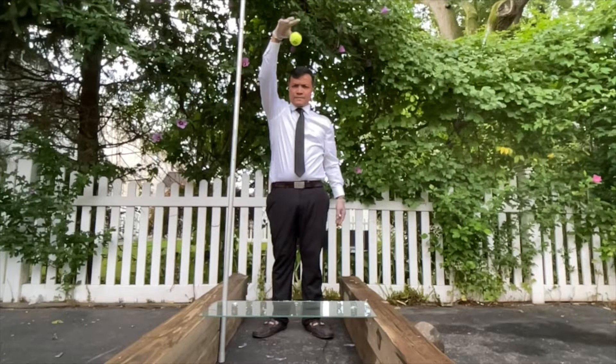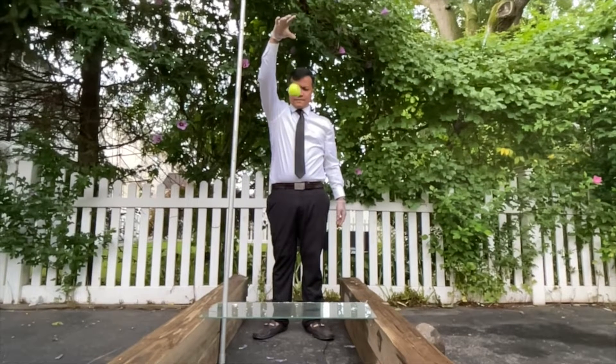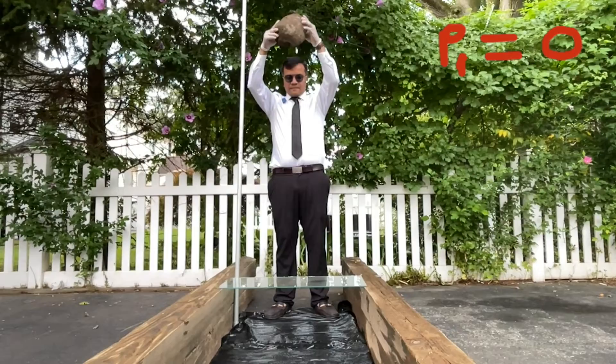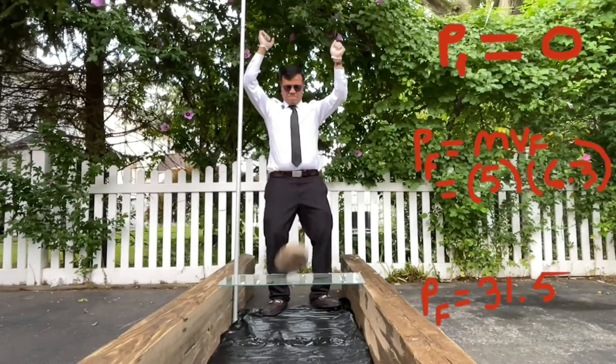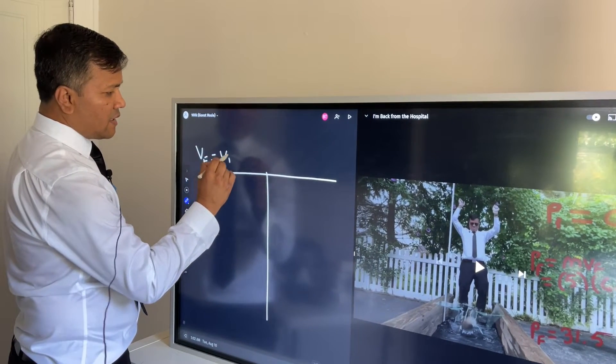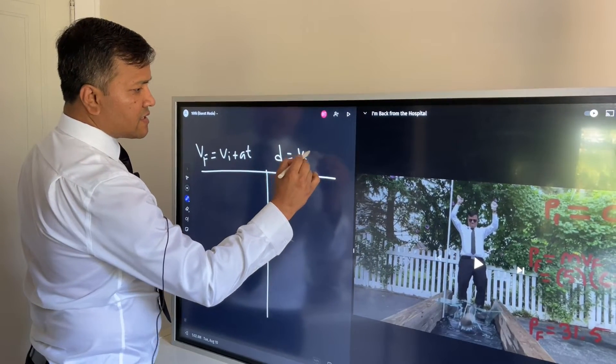In this video you're going to find the elapsed time for the rock and tennis ball using two kinematic equations we proved for flip classroom. v = vi + at and d = vi*t